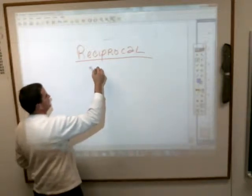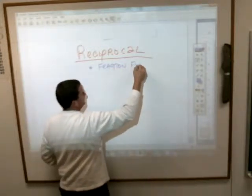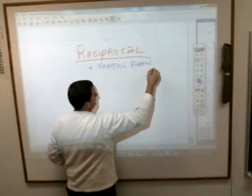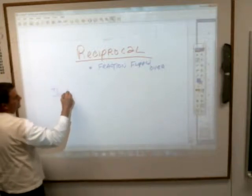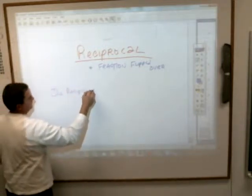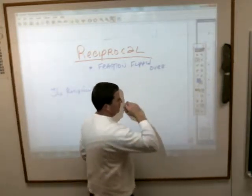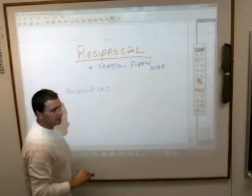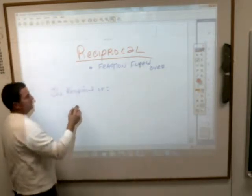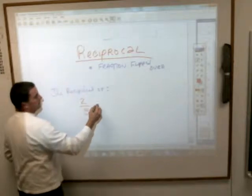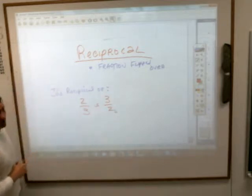The reciprocal of something is just the fraction flipped over. And it's a pretty simple thing, make sure you have some notes, because a fraction flipped over may not mean anything to you so much, but the reciprocal of two-thirds just means you just turn those numbers around and you make it three-halves. That's all it is.